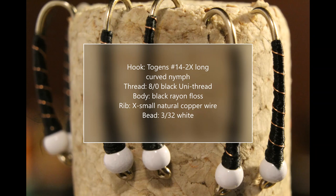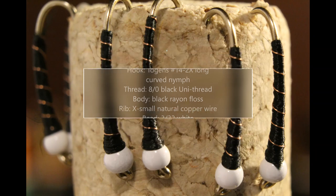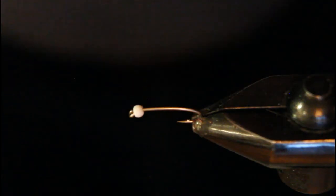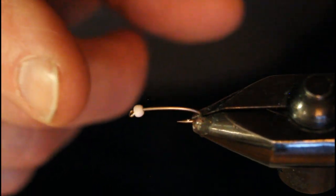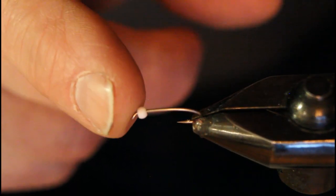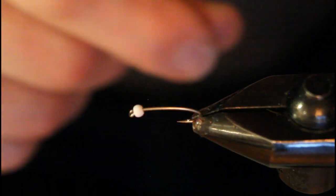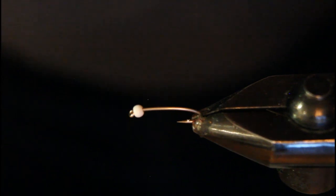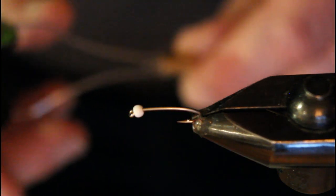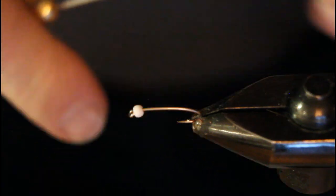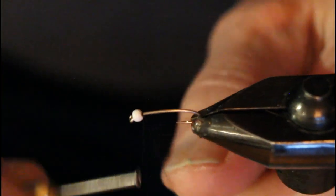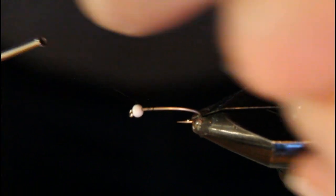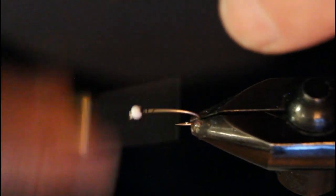If you like this video, please tap that subscribe button on the bottom right of your screen. Thank you. Into my vice, I have a Tiemco number 14, 2x long curved nymph hook. Most chironomids are small, so 14 is good, although I do tie this in 12s and 10s as well. I am taking my 8-0 black Uni thread and going to build up a bit of taper behind that 3/32nd white bead.